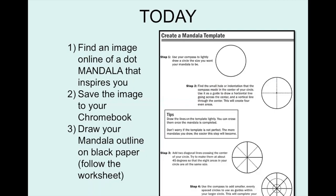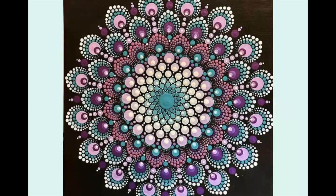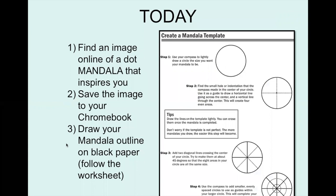Here's what we need to do today. First, find an image online of a dot mandala that inspires you and save it to your Chromebook — if that's as far as you get today, that's fine. You also need to be able to zoom in on your photo to see the detail. Then you're going to draw your mandala outline on a black piece of paper. I'm going to post this worksheet on Google Classroom and also create a video on how to do this.